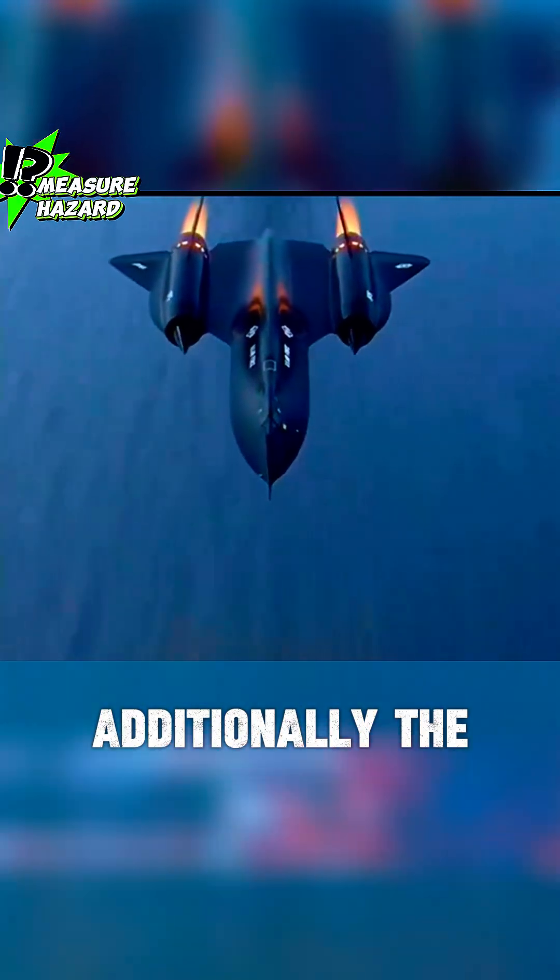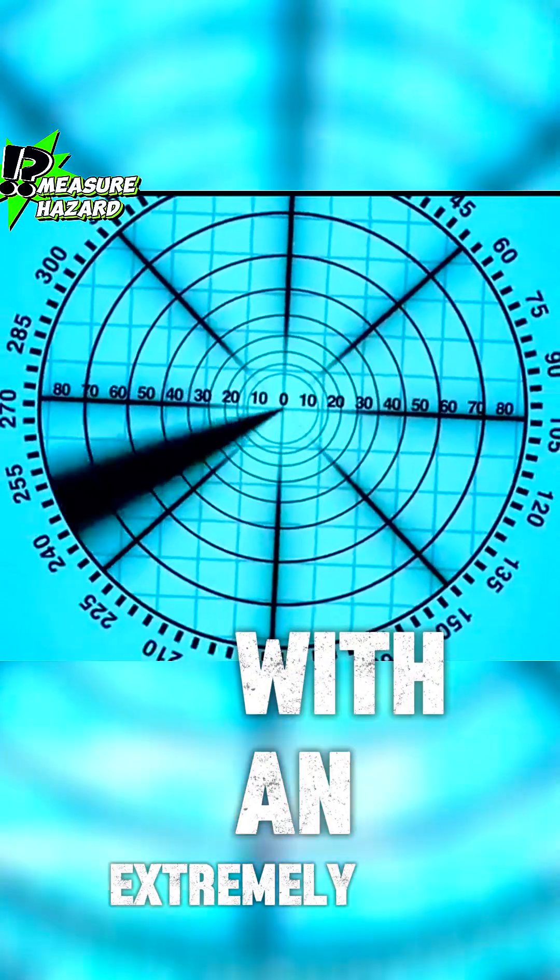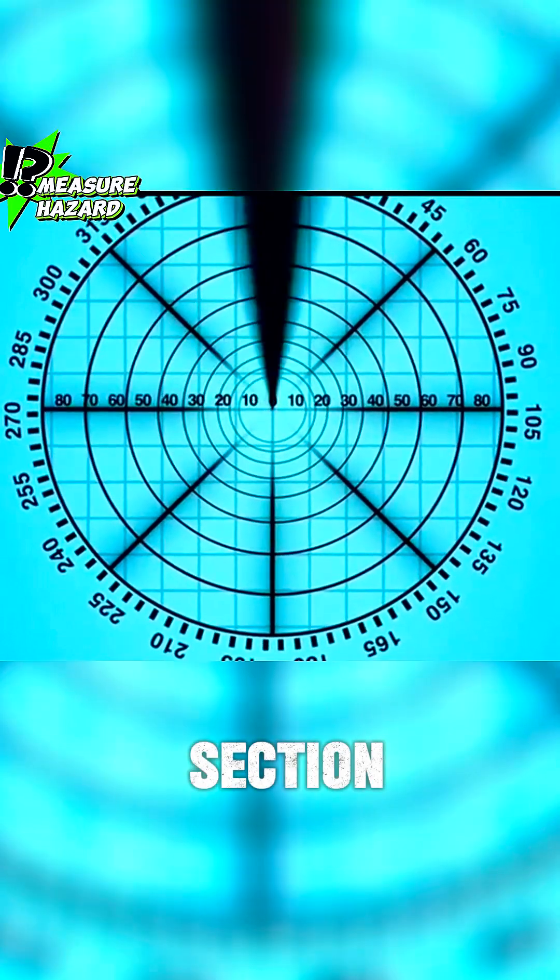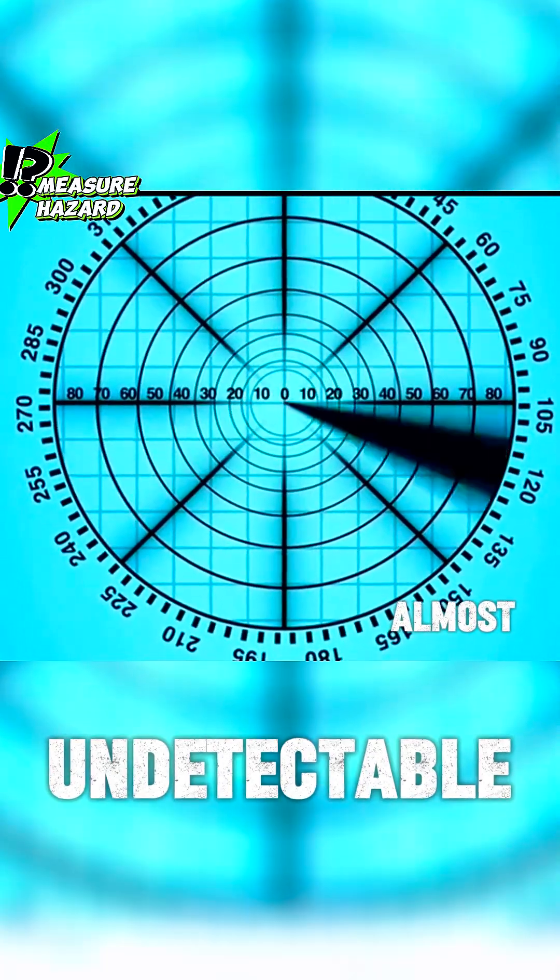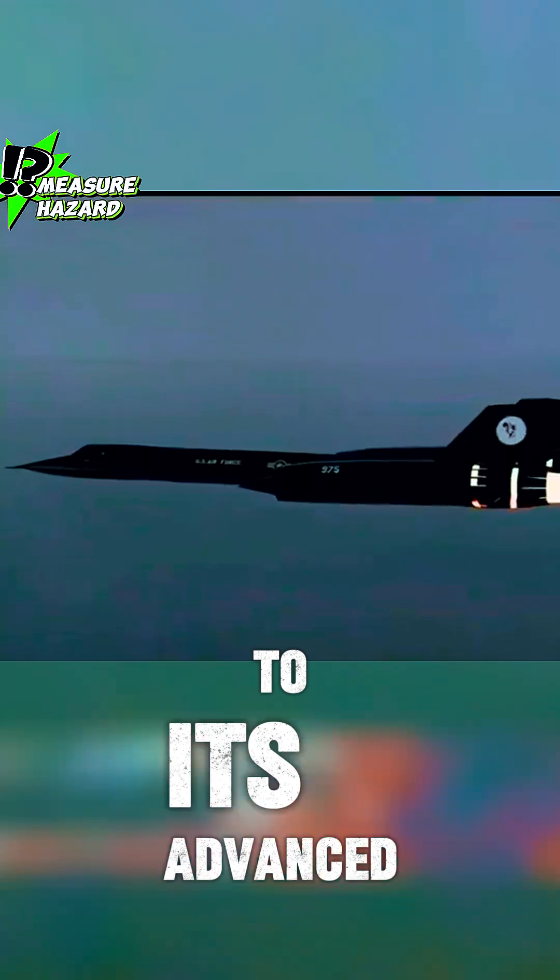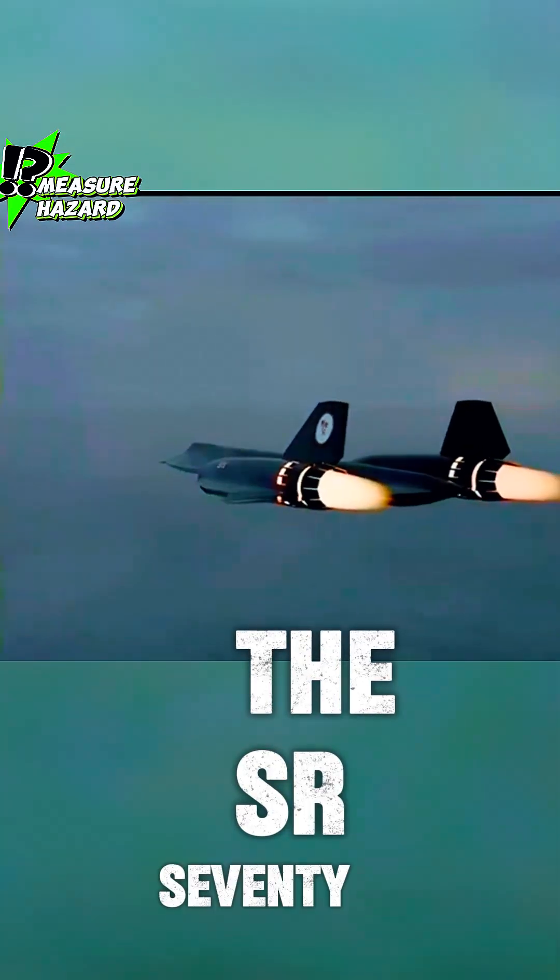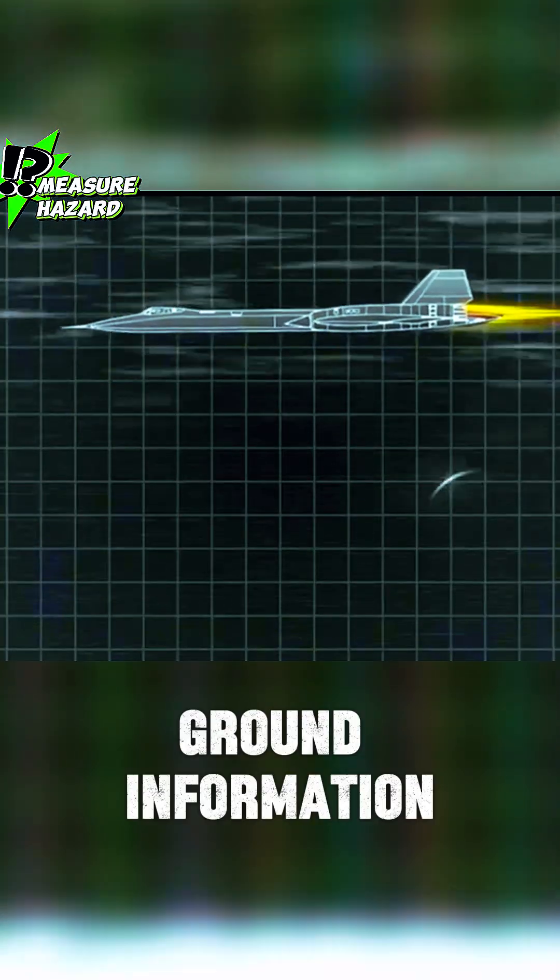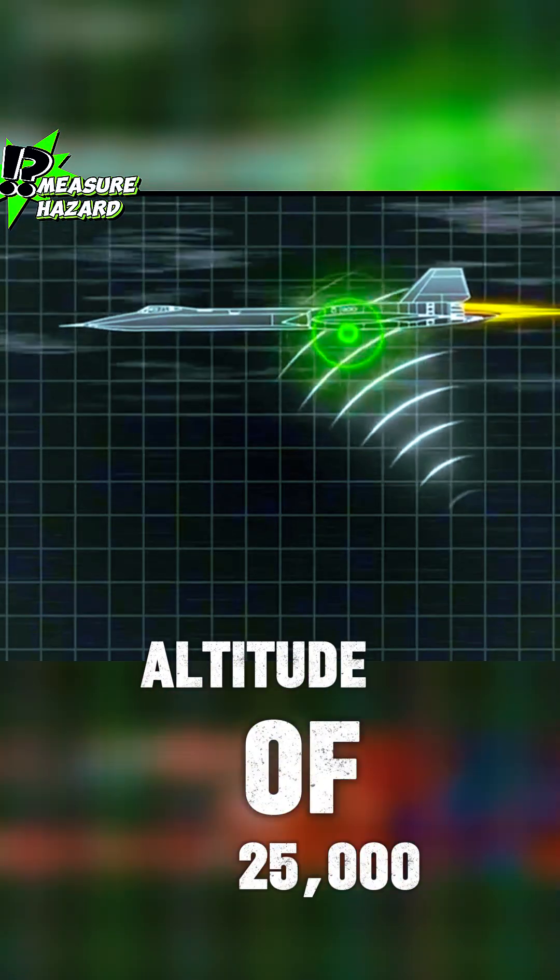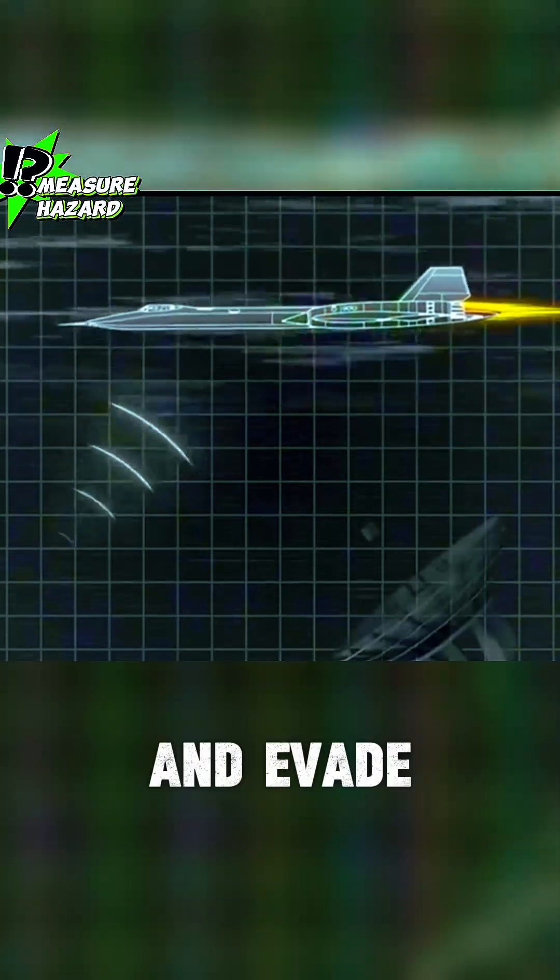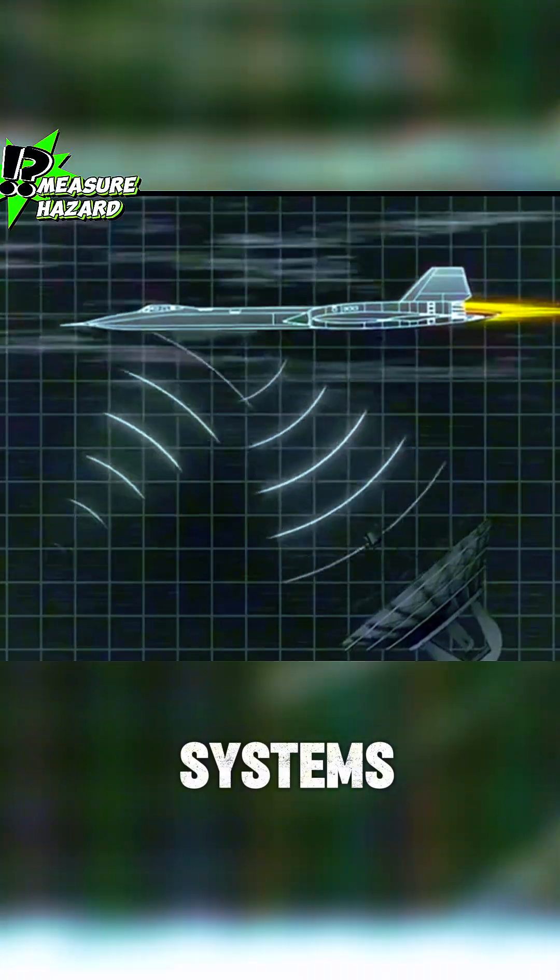Additionally, the aircraft featured stealth capabilities, with an extremely small radar cross-section, that made it almost undetectable by radar. Thanks to its advanced technology, the SR-71 could scan ground information from an altitude of 25,000 km, and evade ground-based detection systems.